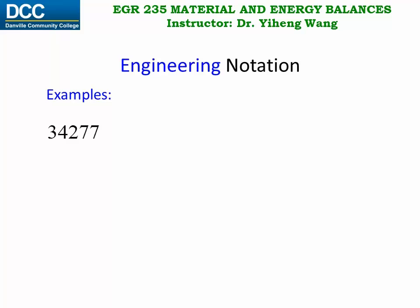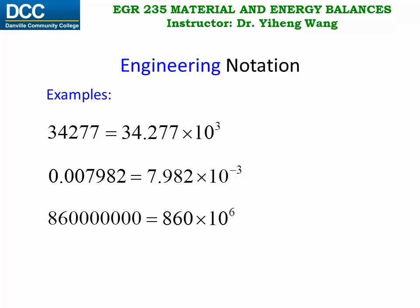Therefore, this written in engineering notation is 34.277 times ten to the third power, and this is 7.982 times ten to the negative third power. And this number here is 860 times ten to the sixth power. As you can see, for the last number there are only two significant figures, eight and six. Therefore, in engineering notation, not all digits in the coefficient are significant.